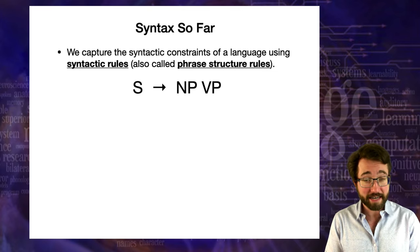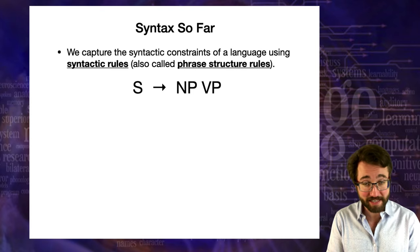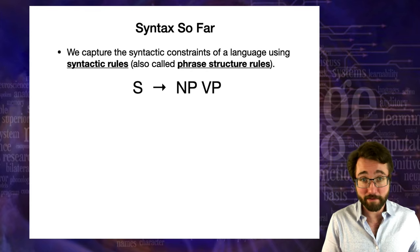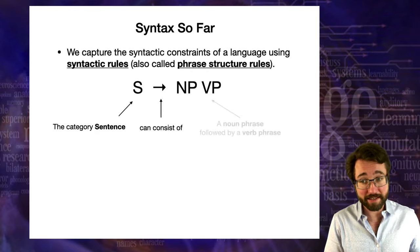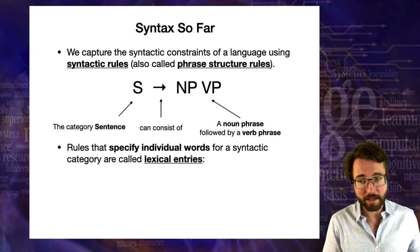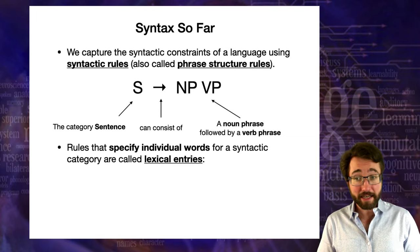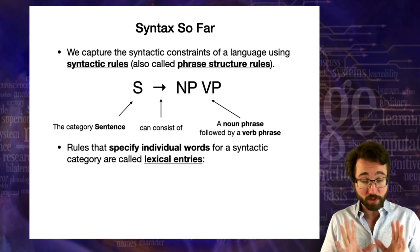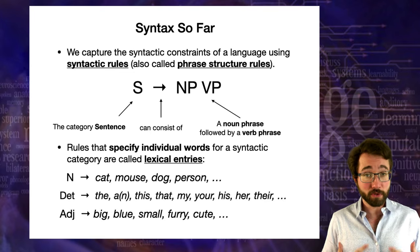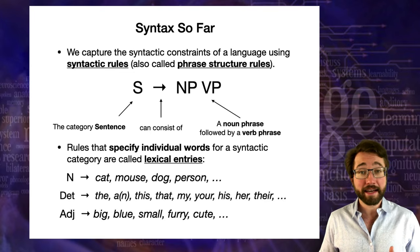A syntactic rule looks like this. This says the category S for sentence can consist of a noun phrase NP followed by a verb phrase VP. The rules that specify individual words which realize syntactic categories are called lexical entries — things like the category N can consist of the word 'cat,' and so on.